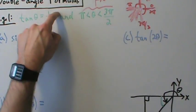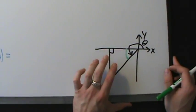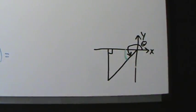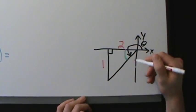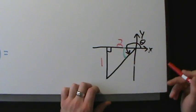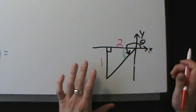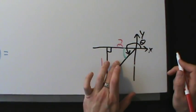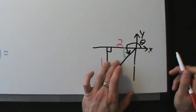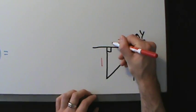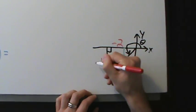Now, since we don't want to worry too much about positivity and negativity later: we're in quadrant 3, so tangent is positive, cosine is negative, and sine is negative. What we can do is label the sides as negative 2 and negative 1. Starting at the origin, we go to the left in the negative x direction — so that side is negative 2 — then down in the negative y direction, so that's negative 1.